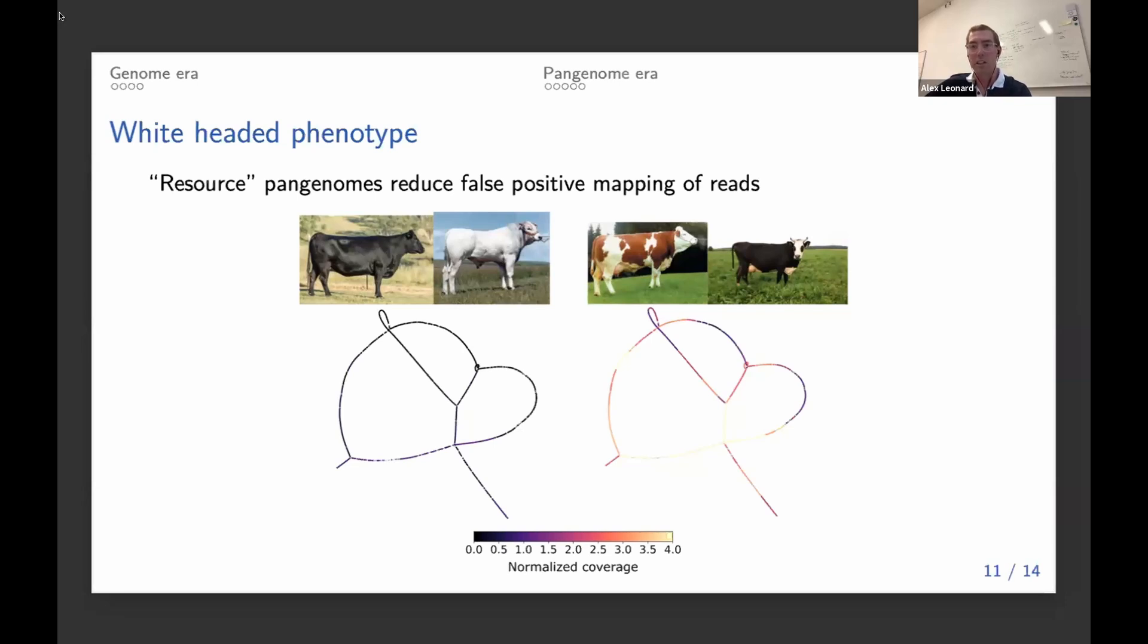But when we included the diversity in the pangenome and we were able to map to these coordinates not represented in the reference, we were able to distinguish the differences between these breeds.